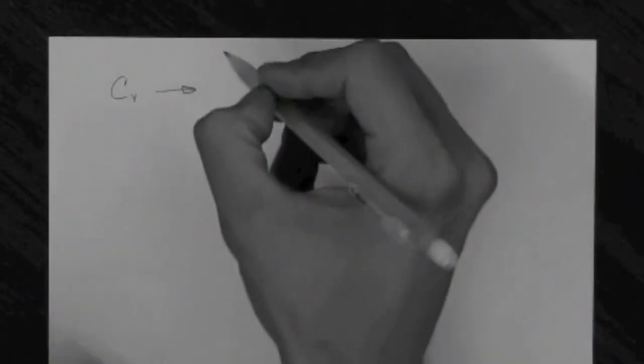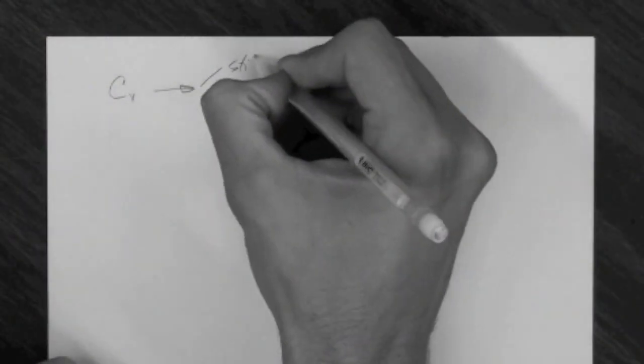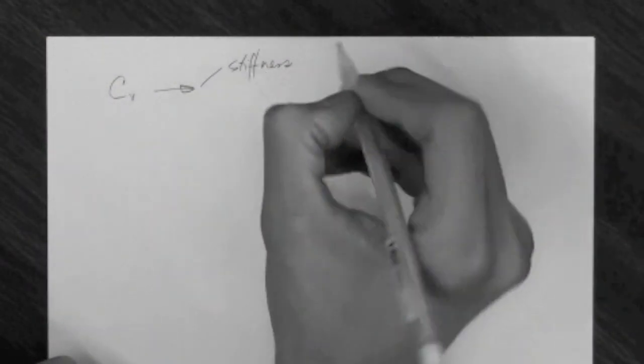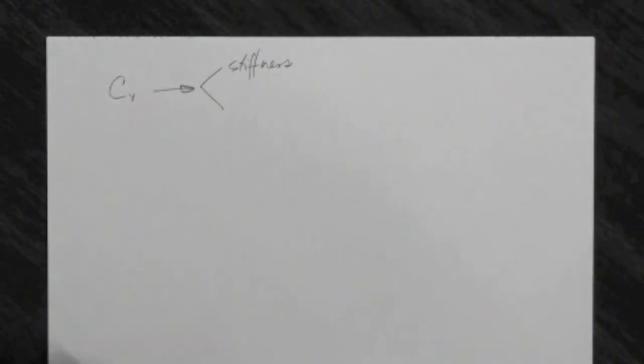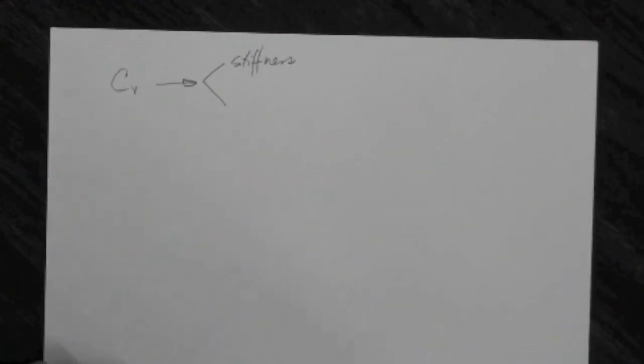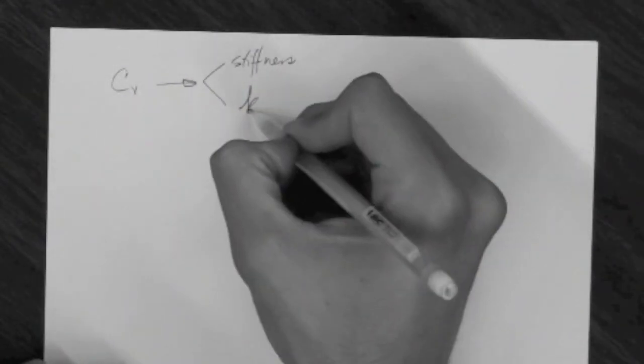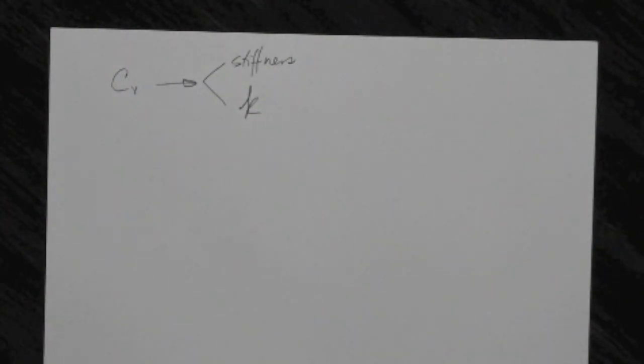The C sub V parameter tells you how quickly a layer consolidates. That depends on the compressibility of the soil, or the stiffness, which is the inverse of compressibility. It also depends on the hydraulic conductivity of the soil. So C sub V is a function of stiffness and hydraulic conductivity.